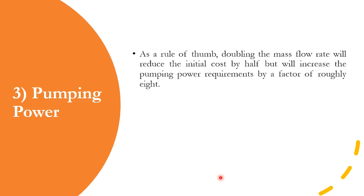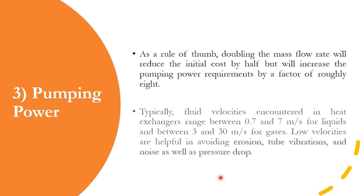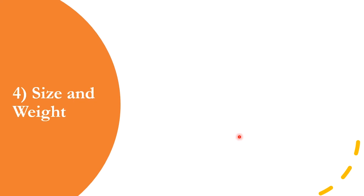You need to find a trade-off between how much reduction in flow rate you can afford and how much increase in pumping power you can afford. Typically, fluid velocities in heat exchangers range between 0.7 to 7 m/s for liquids and 3 to 30 m/s for gases. Low velocities are usually preferred as they help avoid erosion, vibration, noise, and high pressure drop.